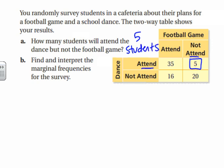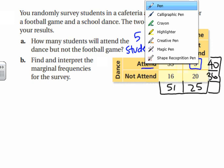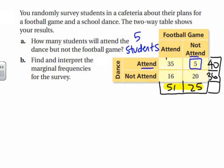For the marginal frequencies, we'll add boxes to the side, boxes below, and a box for our total. Going across the rows: 35 plus 5 is 40, and 16 plus 20 is 36. Going down the columns: 51 and 25. Your total should match both the row sum and the column sum — if there's a discrepancy, go back and double-check.